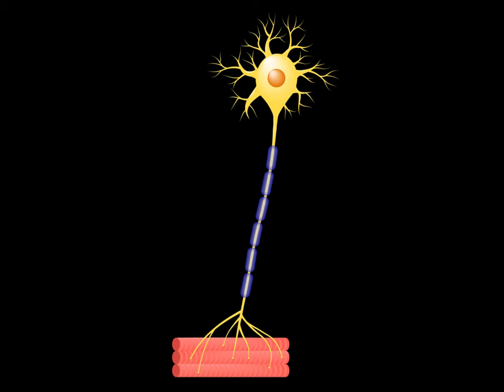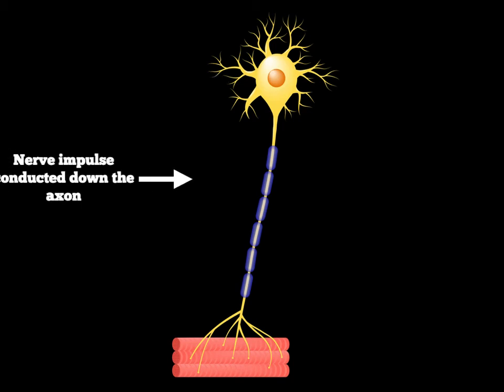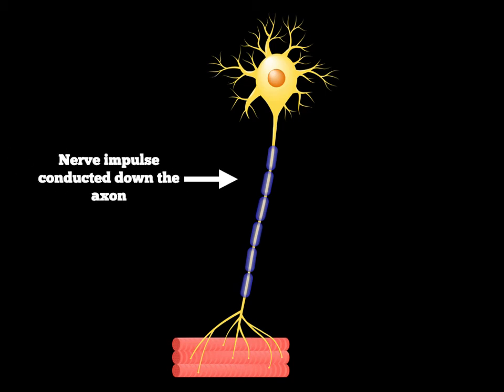To recap what we've been discussing: the nerve impulse starts at the head of the motor neuron, and we're going to conduct that nerve impulse to the muscle fibre. That nerve impulse will travel down the axon — the middle of the motor neuron.